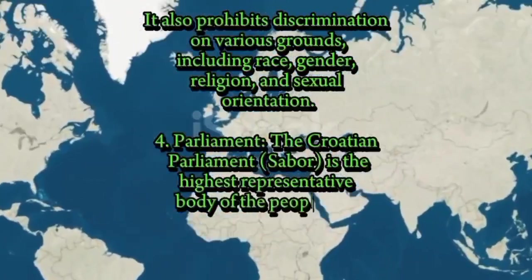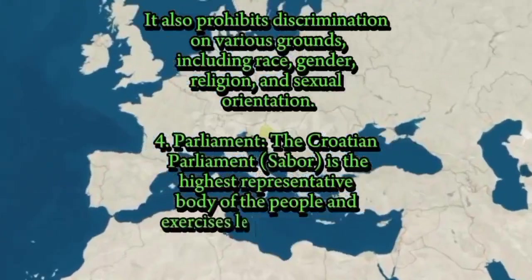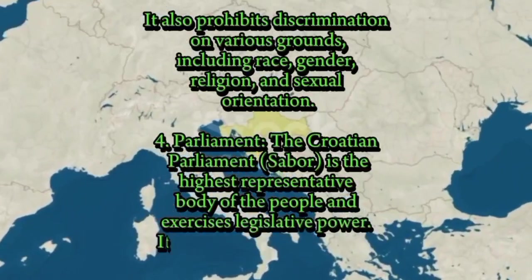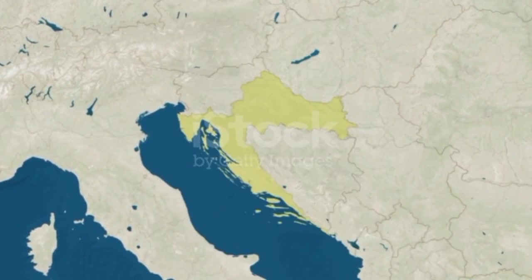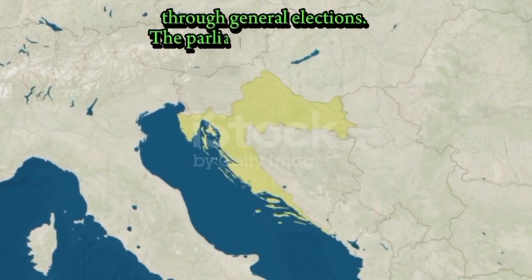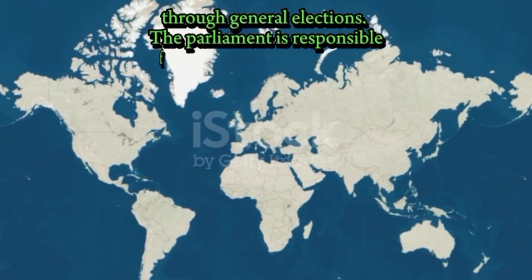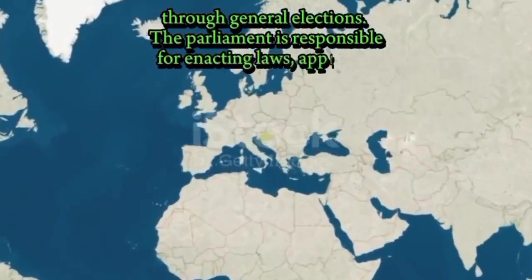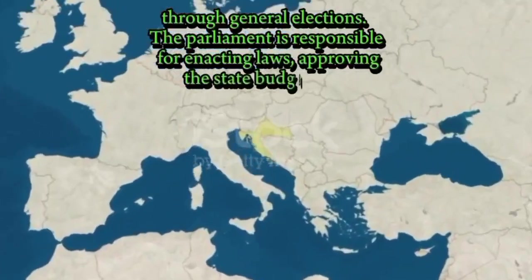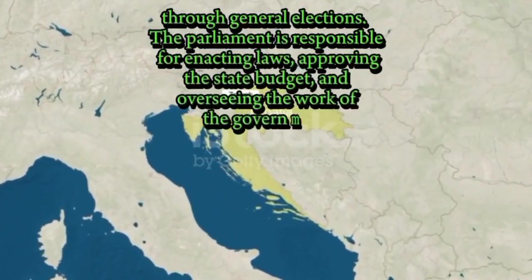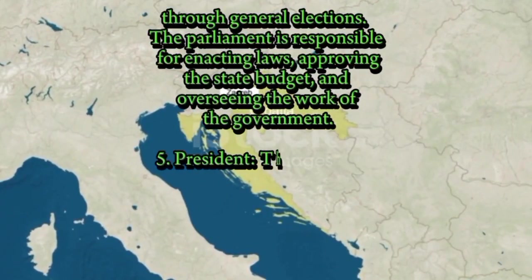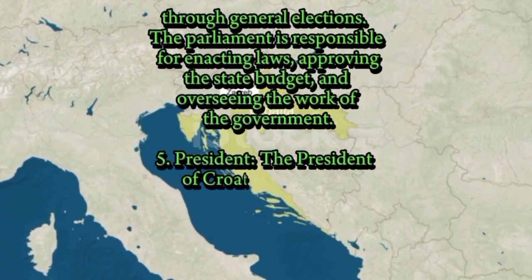Four: Parliament. The Croatian parliament, the Sabor, is the highest representative body of the people and exercises legislative power. It is composed of members elected through general elections. The parliament is responsible for enacting laws, approving the state budget, and overseeing the work of the government.